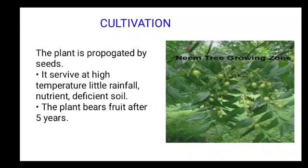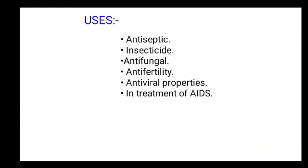Cultivation of neem: the plant is propagated by seeds. It survives at high temperatures, little rainfall, and nutrient-deficient soil. The plant bears fruit after 5 years. Uses of neem: it is used as antiseptic, insecticide, antifungal, antifertility, and has antiviral properties. It is used in the treatment of AIDS — acquired immunodeficiency syndrome.